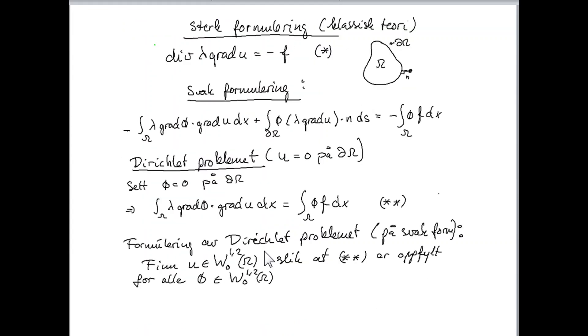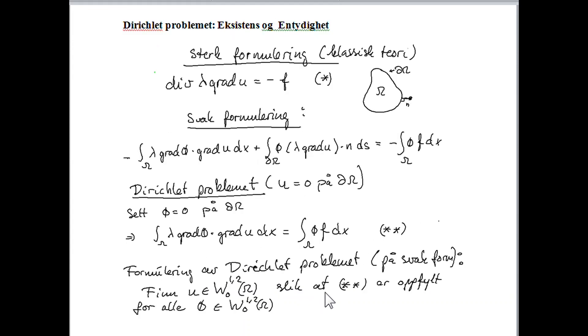So the formulation of the Dirichlet problem takes the following form. Find the unknown u, that is the solution, in W_0^{1,2} of omega, such that this equation is satisfied for all phi elements in this Sobolev space W_0^{1,2}. And it turns out that this formulation has a unique solution.